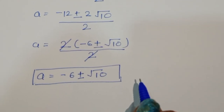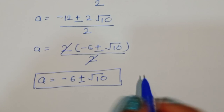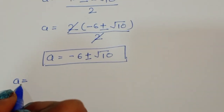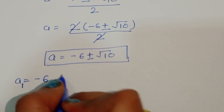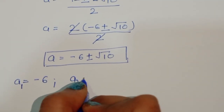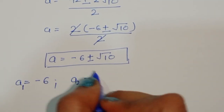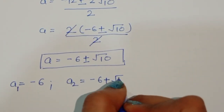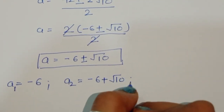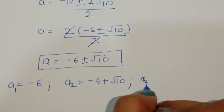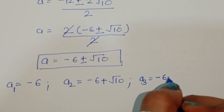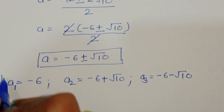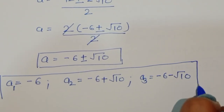So we got three values of A in total: A₁ = -6, A₂ = -6 + √10, and A₃ = -6 - √10.